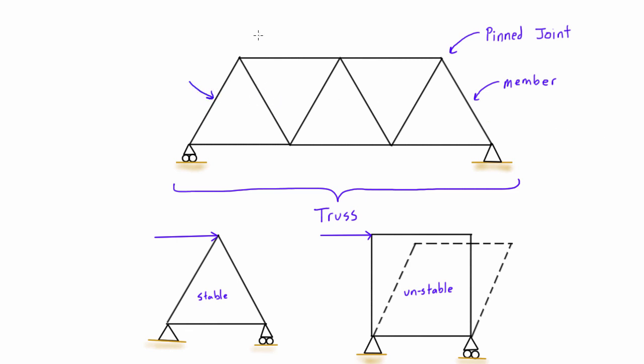So the combination of these two assumptions means that any internal force in a truss member is aligned along the axes, whether it's in tension or compression.